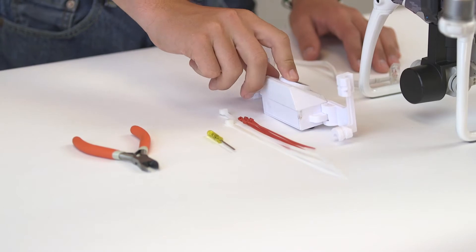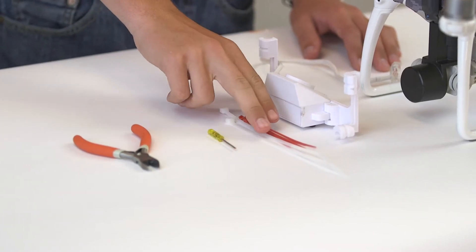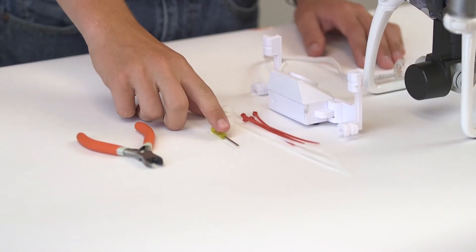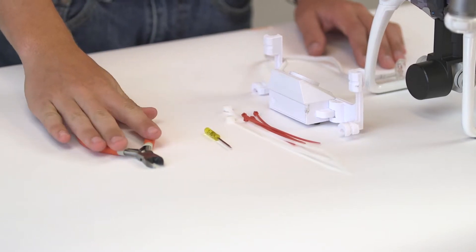Included in your package will be the Barger Drones Siren, numerous long and short zip ties, a screwdriver and a clippers.